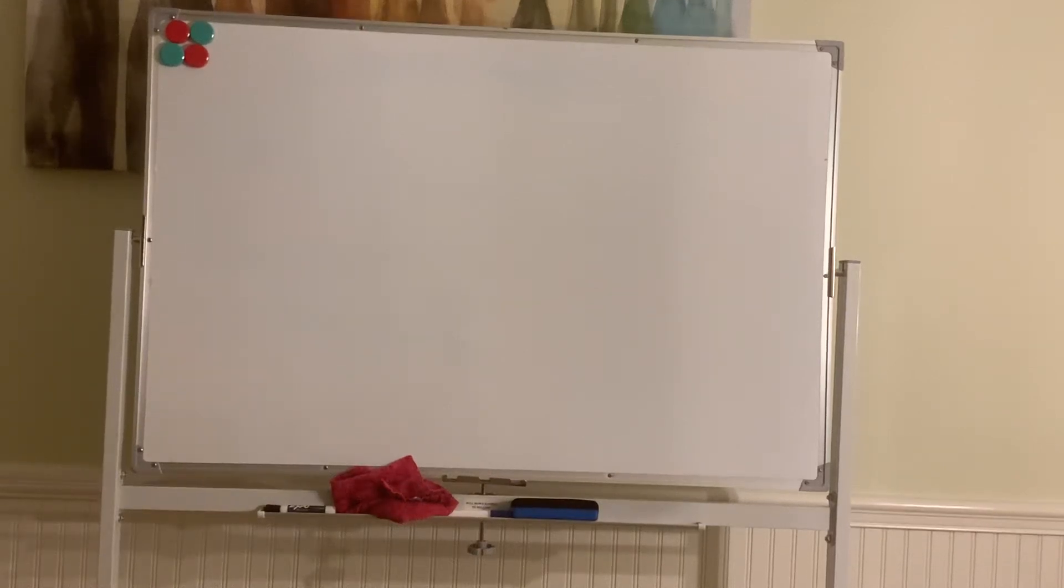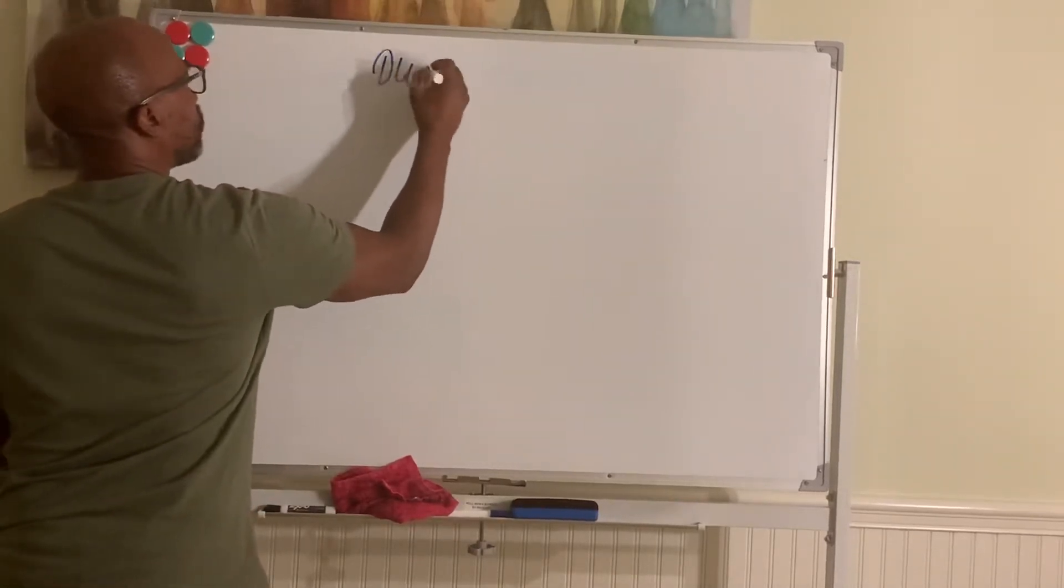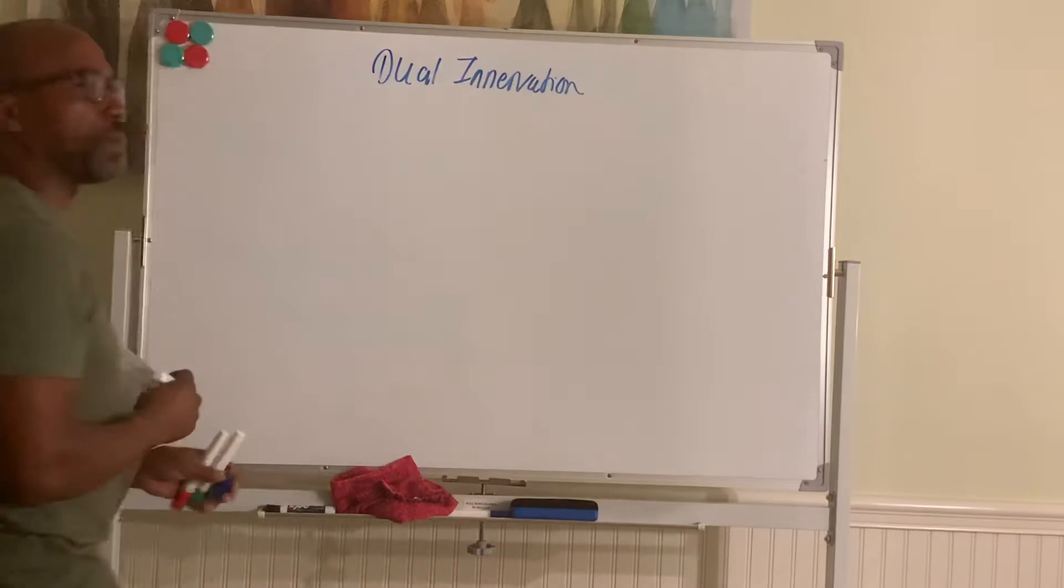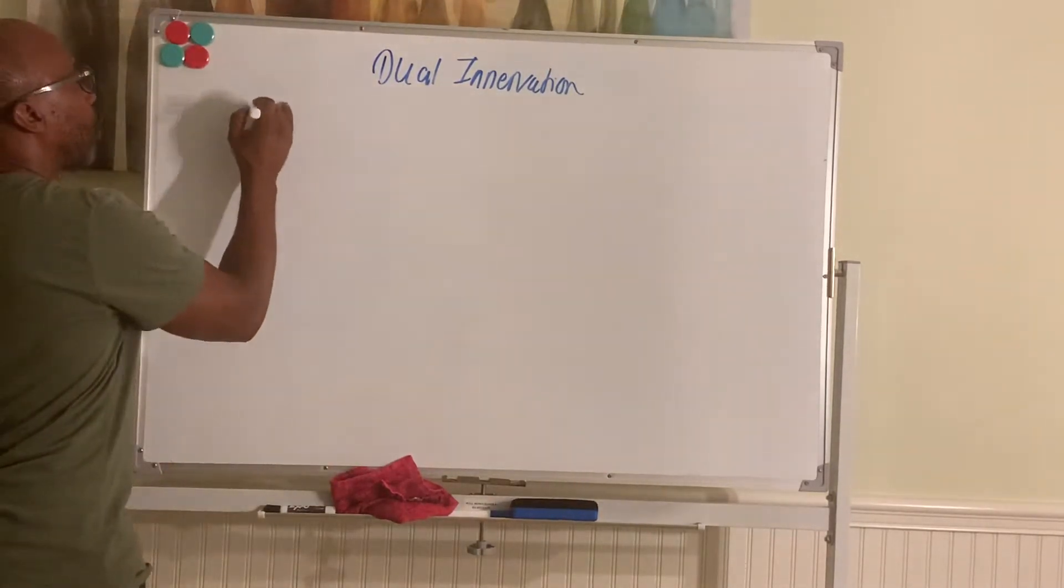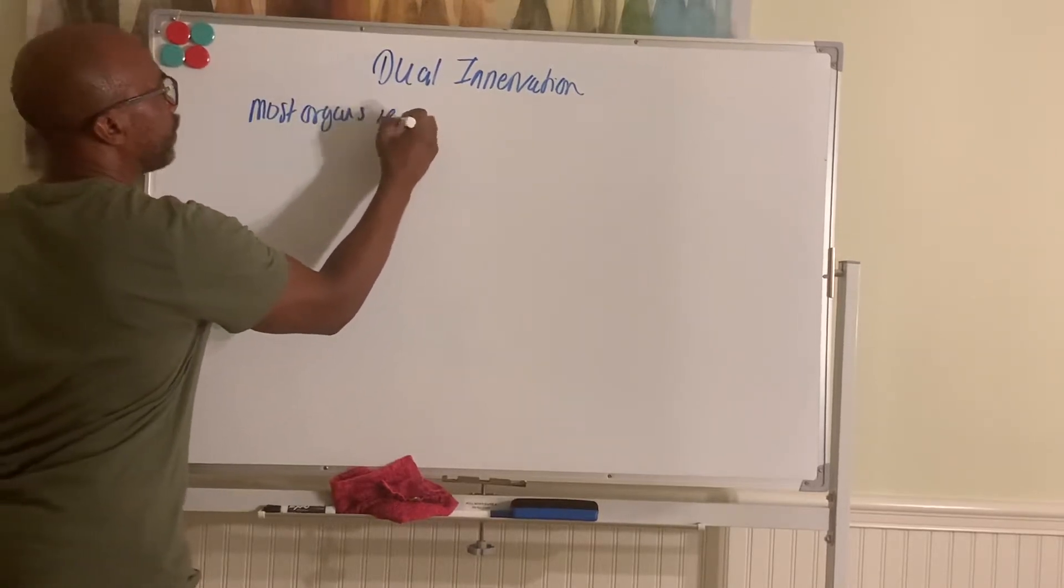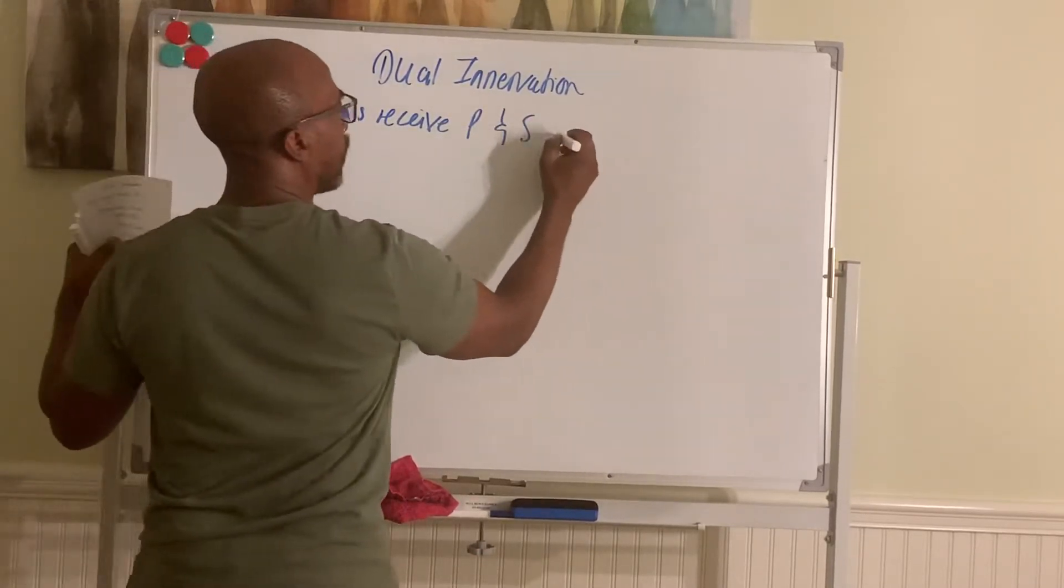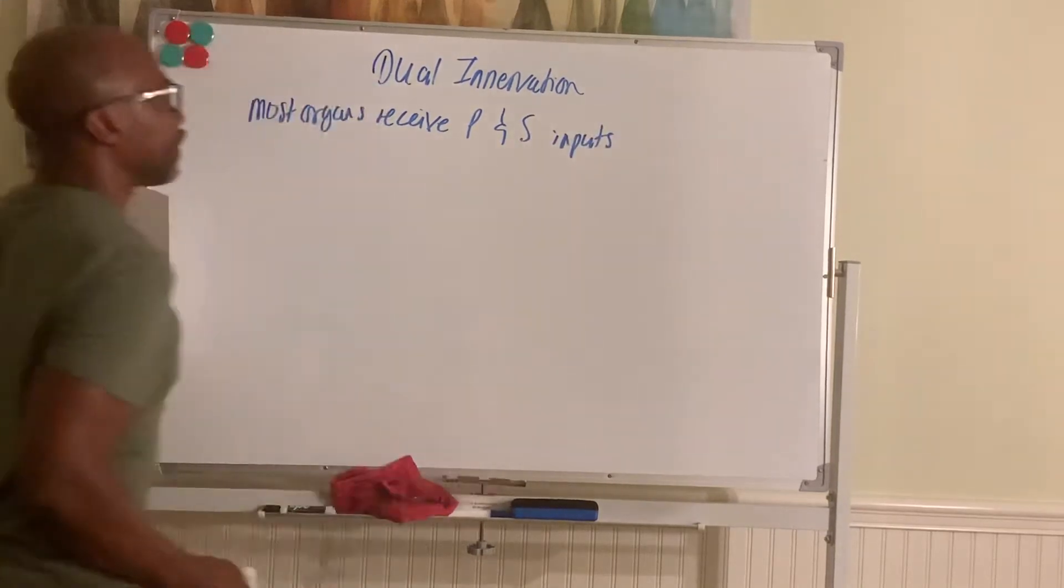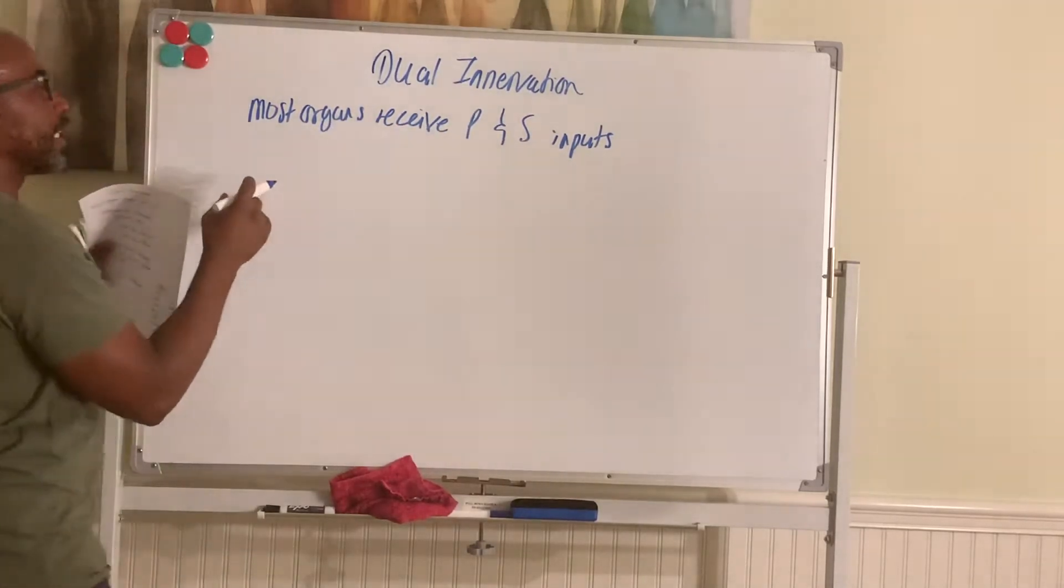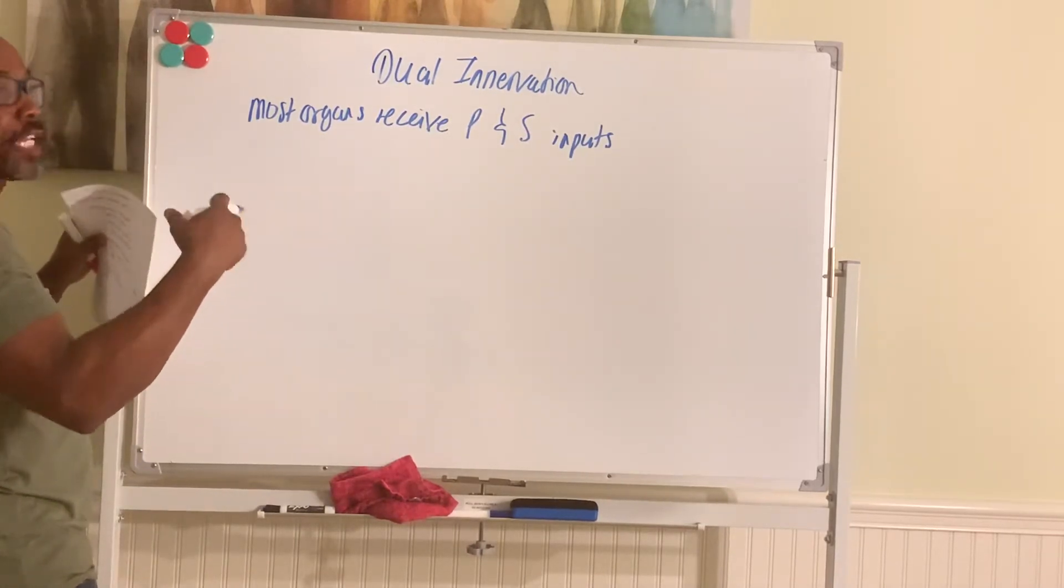Let's continue our discussion at the end. There's something called dual innervation. Dual innervation describes how this system basically works, where most organs receive para and sympathetic inputs. And so when both systems affect the same organs, they can have effects that are opposites or effects that complement each other.